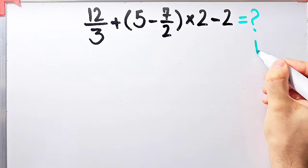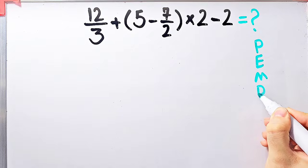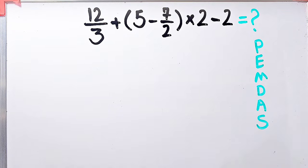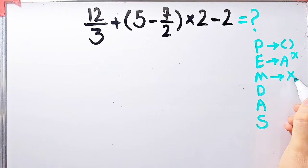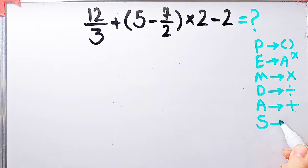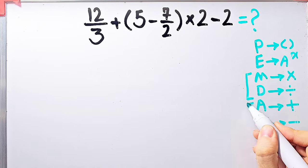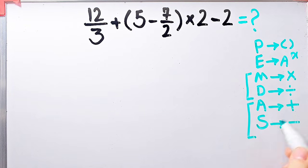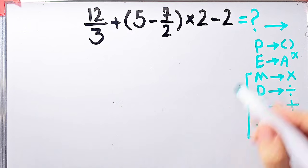To solve this question we need to follow the order of operations, which is PEMDAS. PEMDAS shows the priority of mathematical operations, and if you don't pay attention to this rule you get the wrong answer. P stands for parentheses, E stands for exponent, M stands for multiplication, D stands for division, A stands for addition, and S stands for subtraction. Multiplication and division have the same level of priority; also addition and subtraction have the same level of priority. When we have both in an expression, we start from the left.